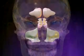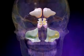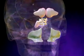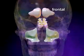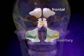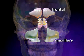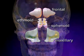During normal respiration, air travels through the nose and into the lungs. Inside the bones of the skull are air pockets called sinuses. The four major sinuses that drain into the nose and throat are the frontal, maxillary, ethmoid, and sphenoid.